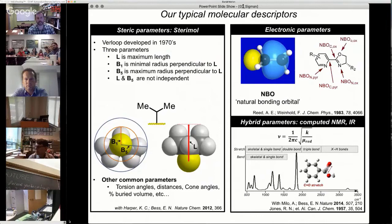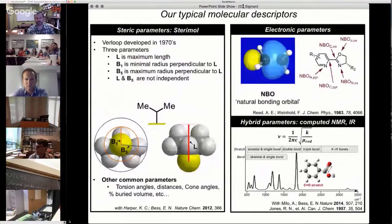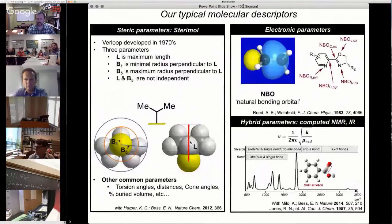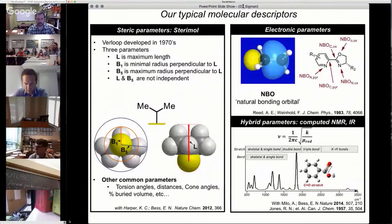The steric parameters are ones that we really like. They're very easy to interpret. They have three basic pieces: length, cross-sectional minimal radius, and cross-sectional maximum radius. We use these quite a bit. Other people have used torsion angles, distances, cone angles, buried volume. We do a lot of designer parameters. And then we look at MBO, other types of point charges. Hybrid parameters, including computed IR frequencies and intensities. More recently, we've been looking at NMR tensors, which is a really exciting field with our friends in Switzerland.